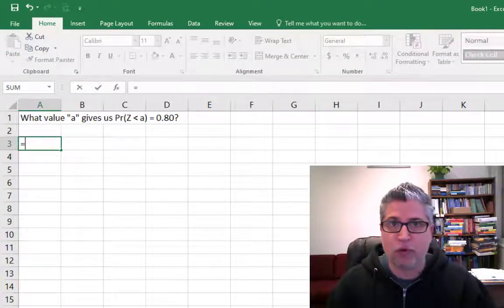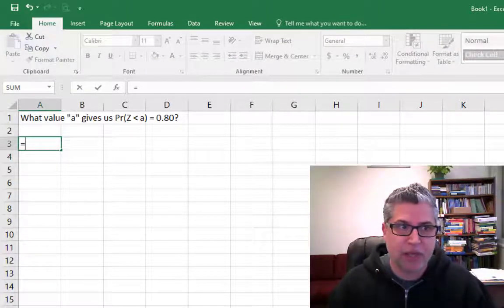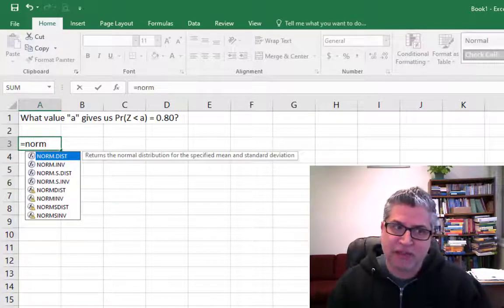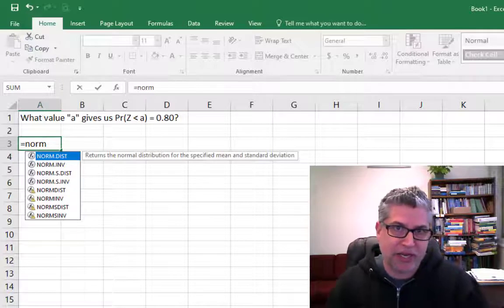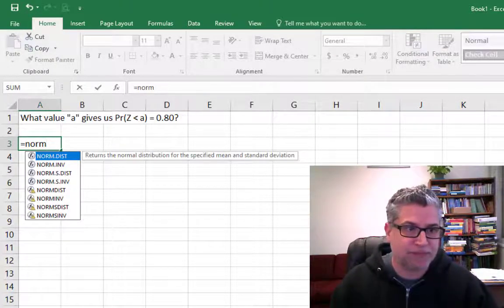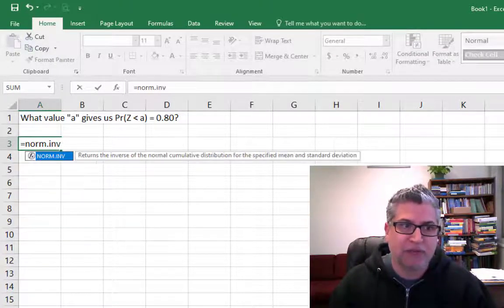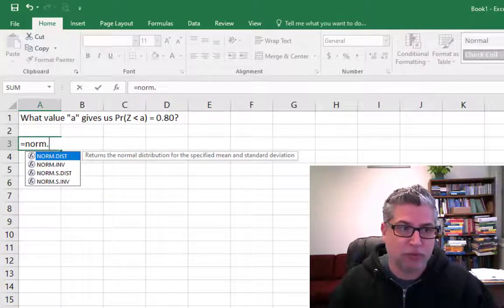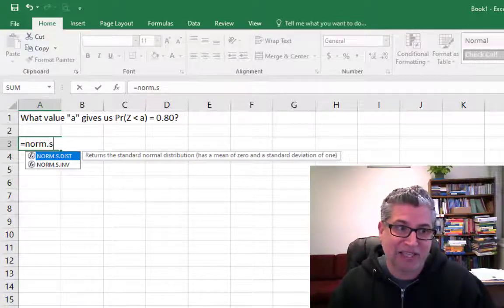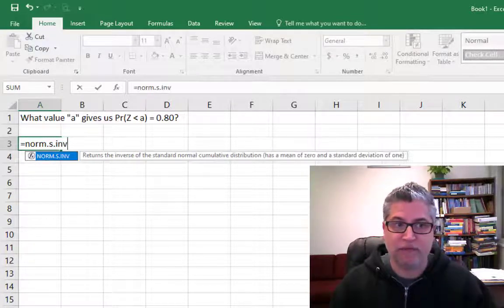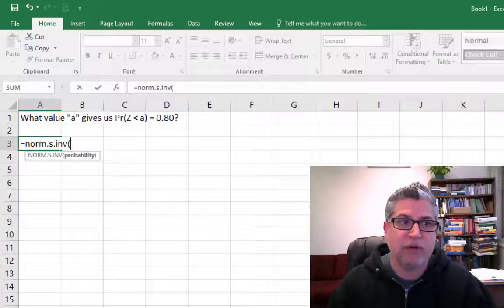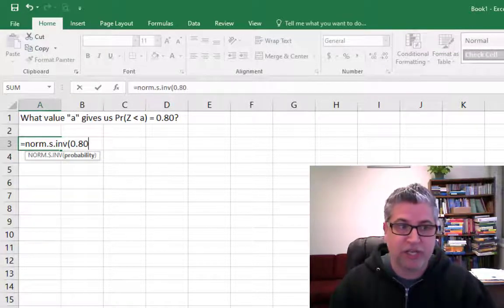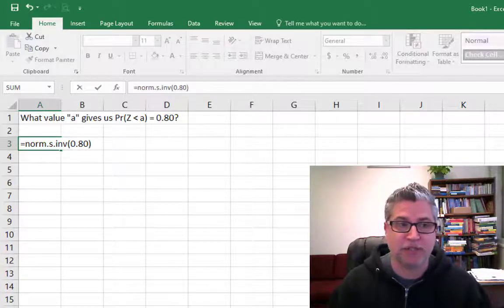So we key in a formula. They all start with an equal sign. And we're dealing with a normal, but now rather than asking for the probability, so we would do .dist, we're going to do an inverse. And there's a couple different inverses. There's an inverse for a standard normal and a non-standard normal. And this was a standard normal. So we're going to do norm S inverse. Then we just open up the parentheses and we provide the probability that your teacher gave you, the 80th percentile.